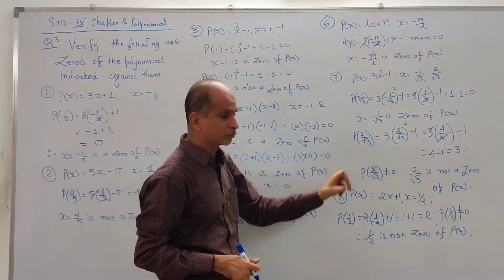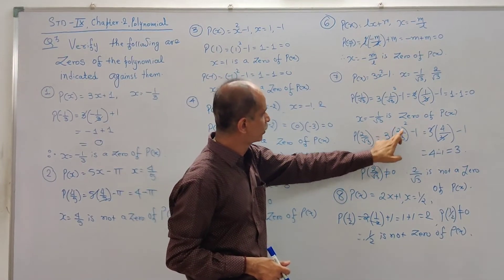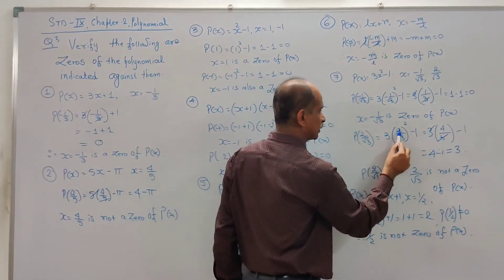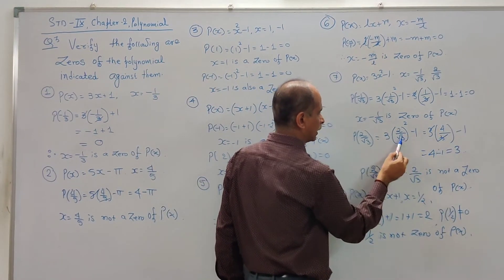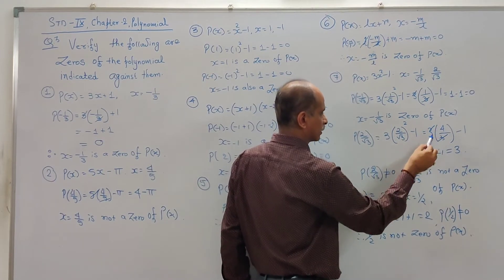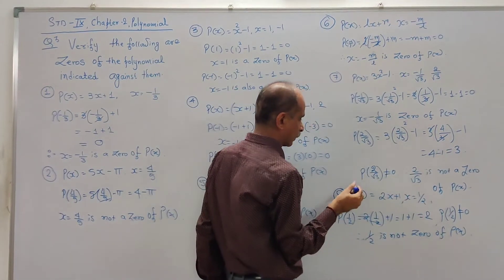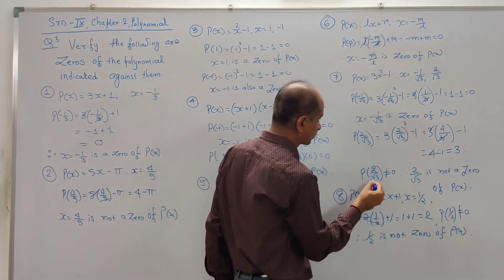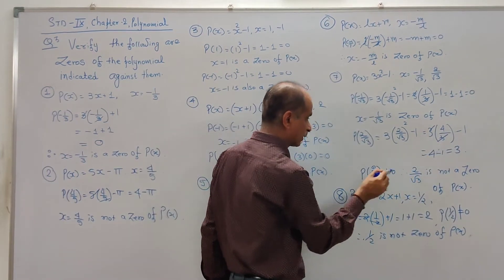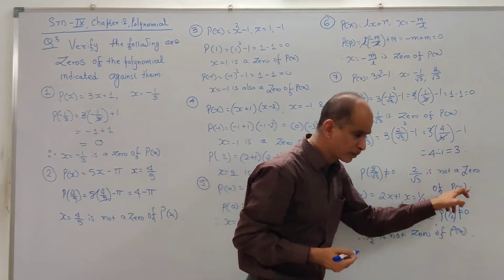Now we check x = 2/√3 for P(x) = 3x² - 1. P(2/√3) = 3 × (2/√3)² - 1 = 3 × (4/3) - 1. The 3s cancel, giving 4 - 1 = 3. So P(2/√3) = 3, which is not equal to 0, and that's why 2/√3 is not a zero of the polynomial.